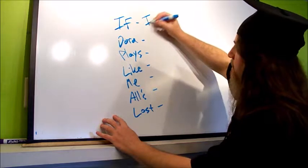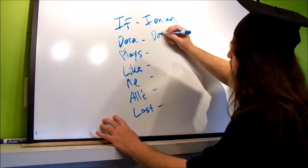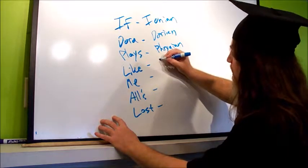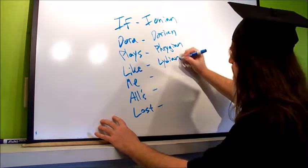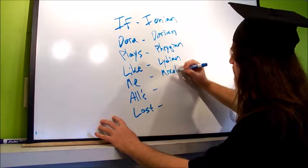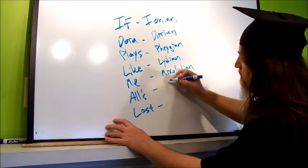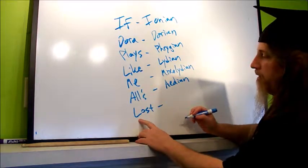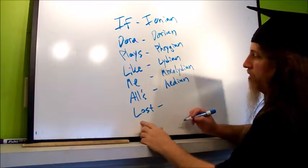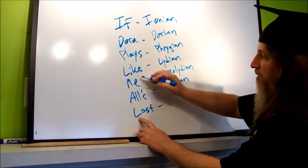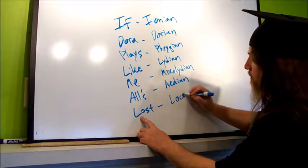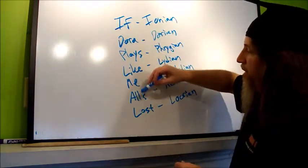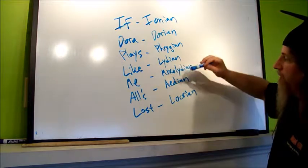So the first one is Ionian, the next one is Dorian, the next one is Phrygian, the next one is Lydian, the next one is Mixolydian, the next one is Aeolian, and the next one also has an L. I'm using the first letter of each of these words from the sentence, but an L like, but it's L-O, so that's Locrian. So I learned the modes as if Dora plays like me all's lost. Ionian, Dorian, Phrygian, Lydian, Mixolydian, Aeolian, and Locrian.